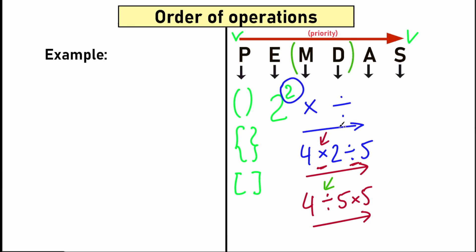Multiplication and division are tied for priority. Similarly, addition and subtraction form one common group with the same priority. Now let's solve a quick example to understand this better. Let's write it in blue: for example, 4 plus, in parentheses, 12 divided by 3, to the second power, times 2. Every time you have a numeric expression with complicated things like parentheses, division, and exponents, write PEMDAS on the side.